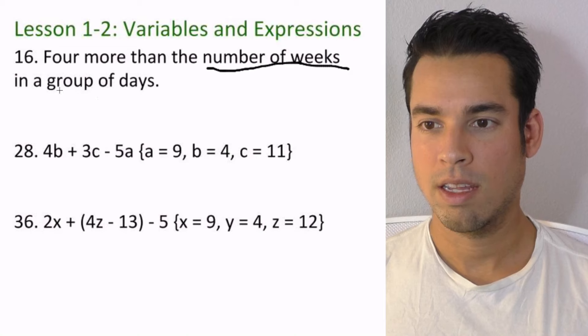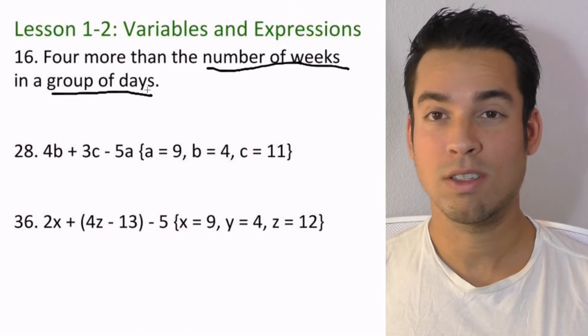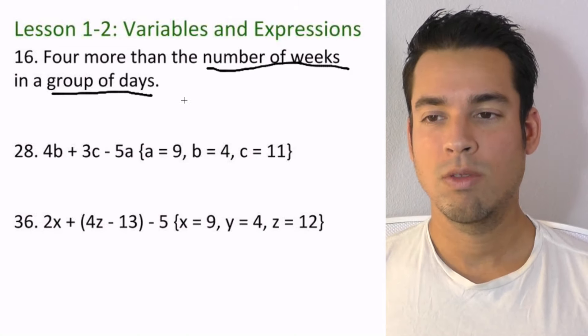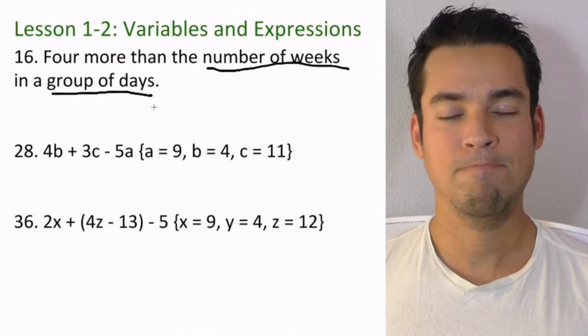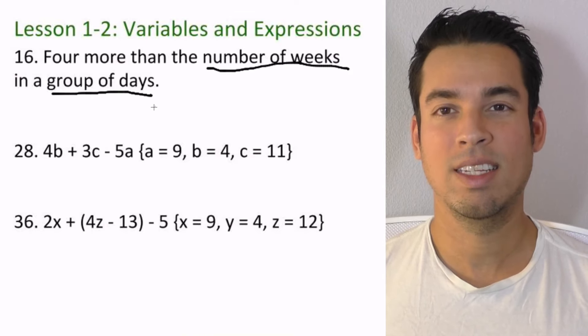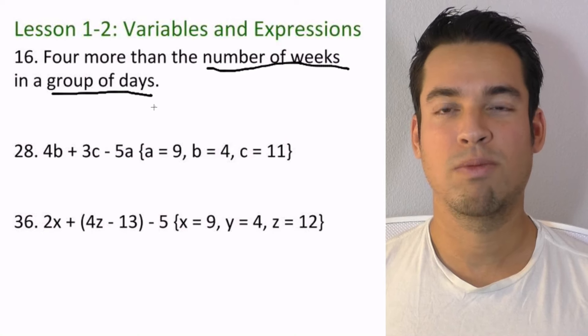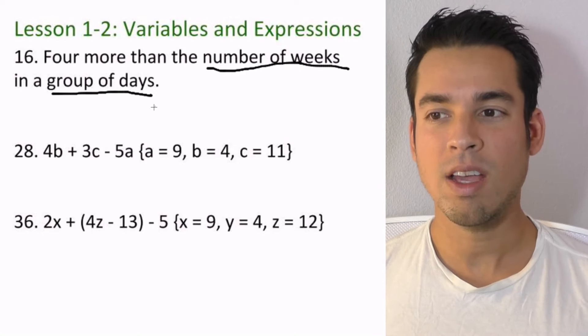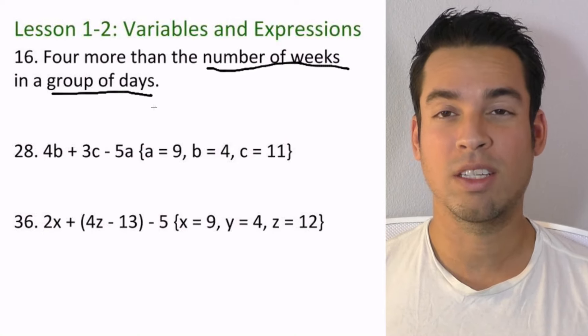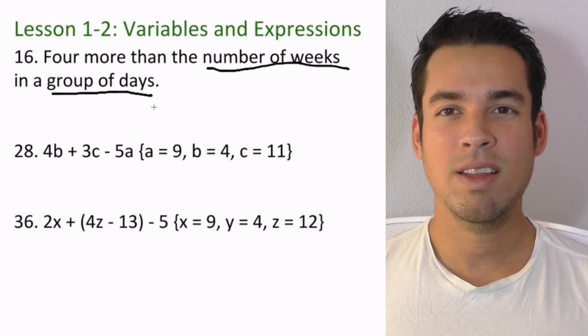This is a hard one. So what are we doing here? We're turning this group of days—maybe it's seven days, maybe it's 14 days—into some sort of a variable expression. We're turning it into a number of weeks. So how do we do that? Well, think about it like this.